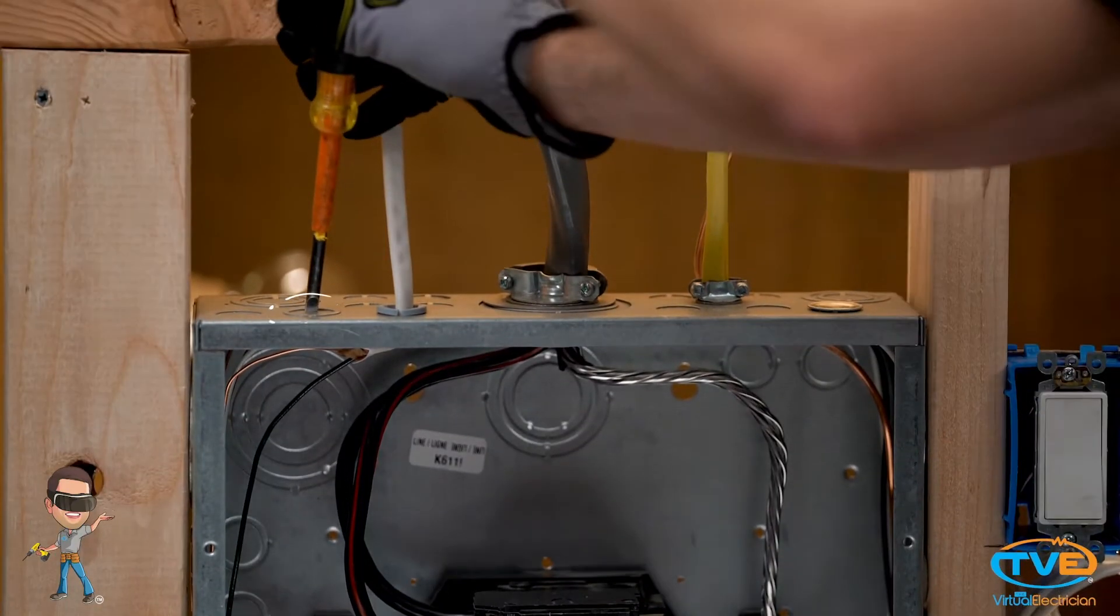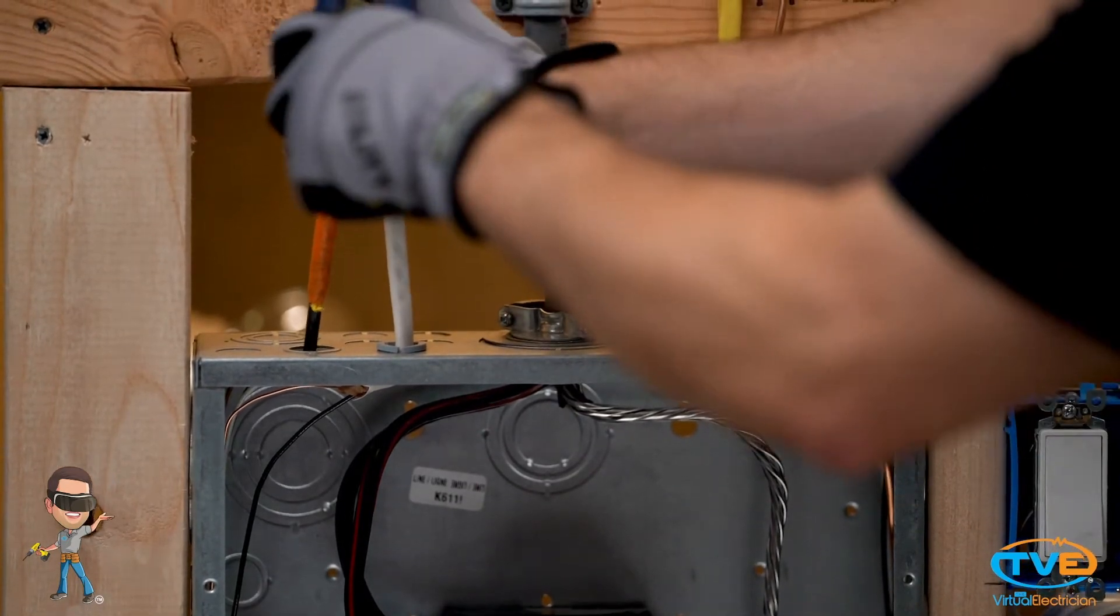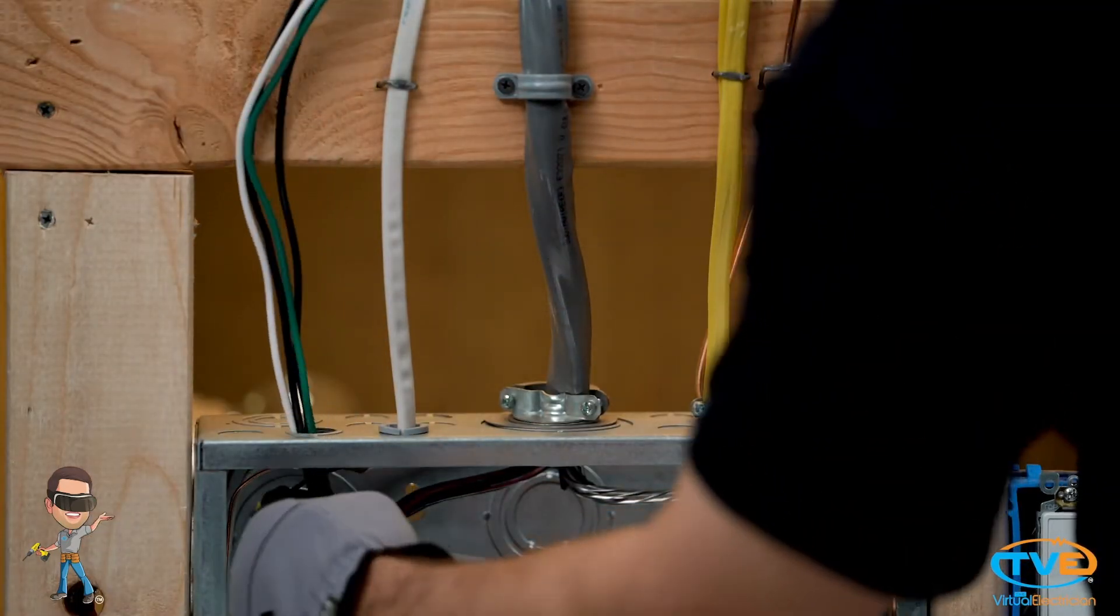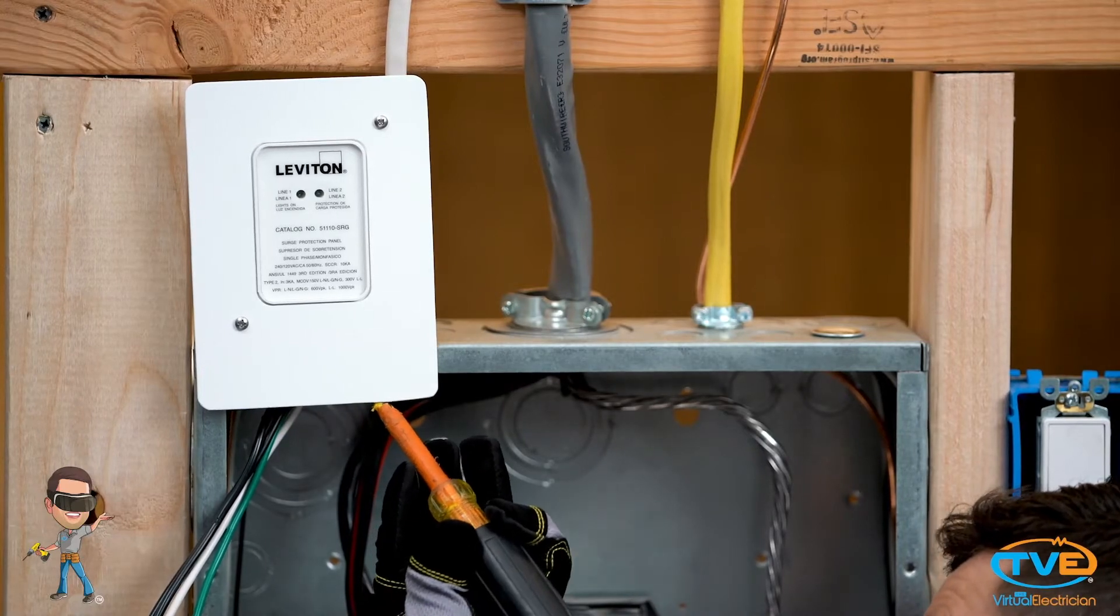Once you have the two spots open, you can attach the surge protector to the panel by knocking out one of the knockout holes on the side of the panel. Then, you just fish the wires through the panel and install the lock nut.